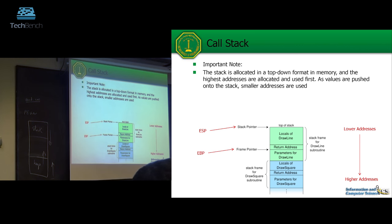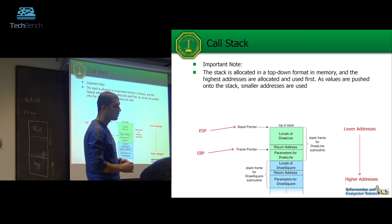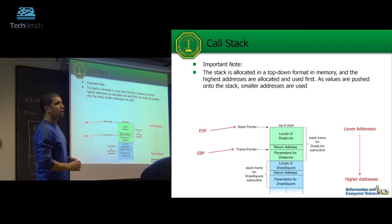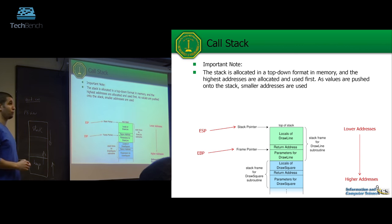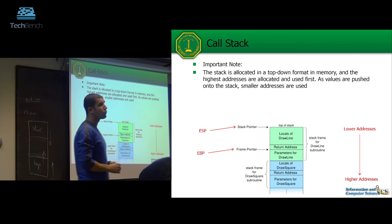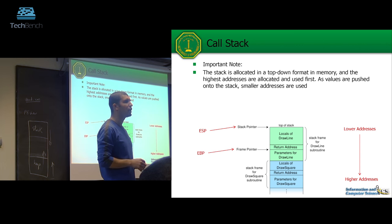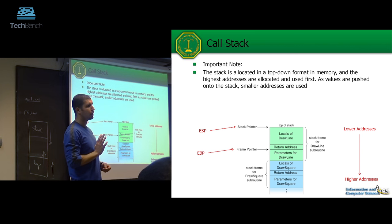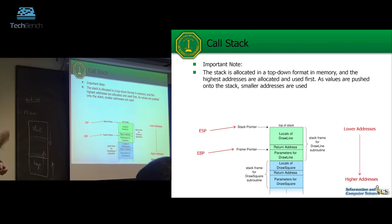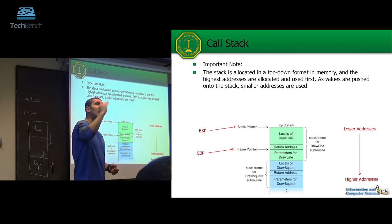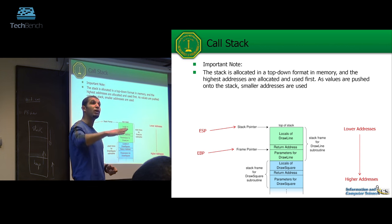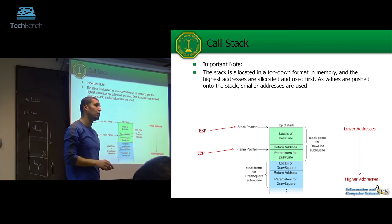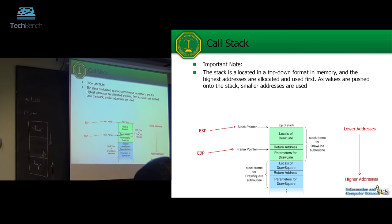If you have a very deep recursive call, you can get a stack overflow — not buffer overflow — because all the memory space allocated for that process for the stack is exhausted. The RAM is shared: roughly half for the OS and half virtual space allocated for the process.